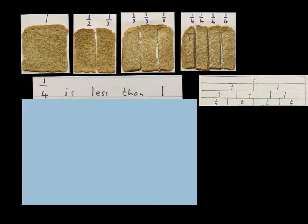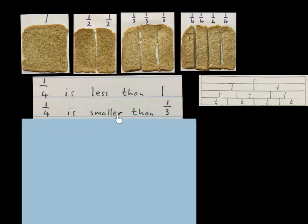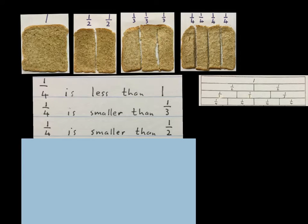Now we will look at one quarter. It says: one quarter is less than one. That means this quarter is definitely less than one — it's one quarter of one. One quarter is smaller than a third: this quarter is smaller than this third. The next statement says: a quarter is smaller than a half, because two quarters fit into a half.